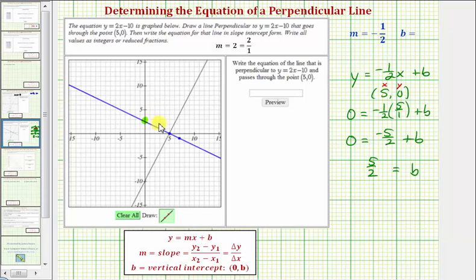And notice how it does look like this blue line crosses the vertical axis at y equals two-point-five. So the equation of our perpendicular line graphed in blue is y equals negative one-half x plus five-halves.